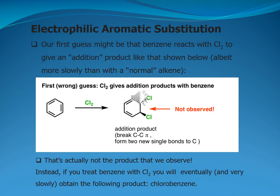Before going to discuss the electrophilic aromatic substitution reactions, let's see the background of these reactions. Our first guess might be that benzene reacts with chlorine to give an addition product, although more slowly than with normal alkenes. In this example, the reaction between benzene and chlorine gives 1,2-dichlorohexadiene, which is an addition product, in which breakage of the carbon-carbon pi bond and formation of two single bonds to the carbon atom takes place.